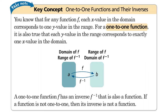Right off the bat, you can tell if a function has an inverse function by determining if it's one-to-one. One-to-one functions pass the vertical line test — a vertical line hits only one point at a time — and they also pass the horizontal line test. No domain values repeat and no range values repeat: for every x there's only one y, and for every y there's only one x. But if the original function is not one-to-one, its inverse will not be a function — it would just be an inverse relation.